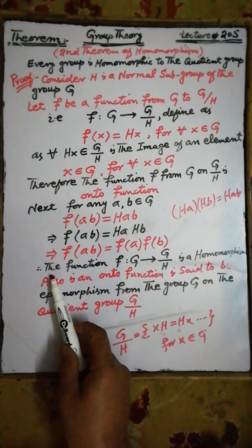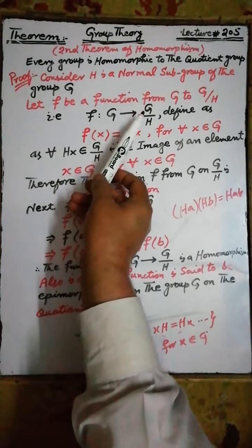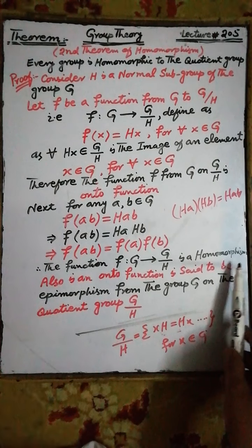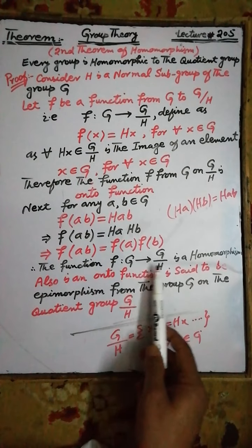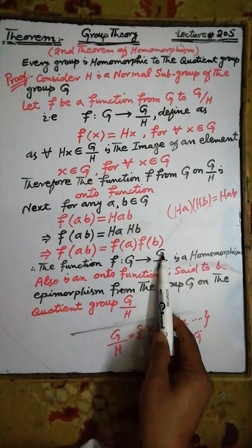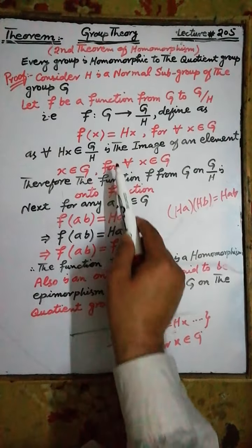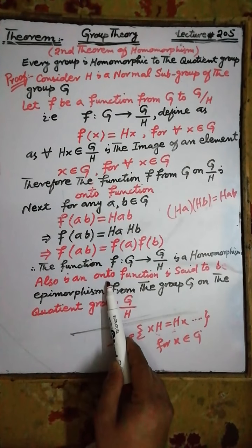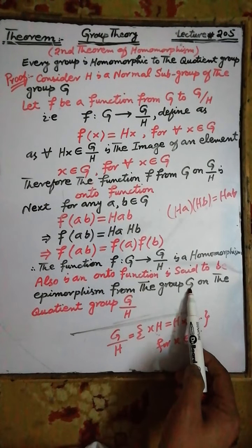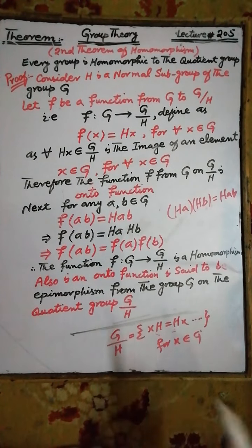Therefore, the function F from the group G to the group G by H is a homomorphism. Also, the homomorphism F from the group G to the group G by H is also an onto function, and is said to be an epimorphism from the group G to the quotient group G by H.